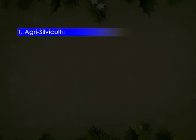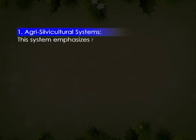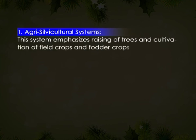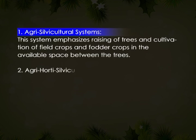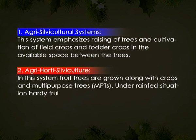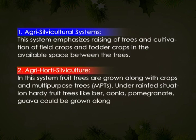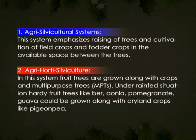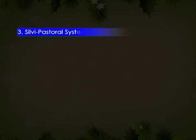The agrisilvicultural system emphasizes raising of trees and cultivation of field crops and/or fodder crops in the available space between the trees. In the agroforestry silvopastoral system, food trees are grown along with crops and multi-purpose trees. Under rainfed situations, hardy food trees like ber, amla, pomegranate, guava could be grown along with dryland crops like pigeon pea, sesame, mung bean, mustard, etc.